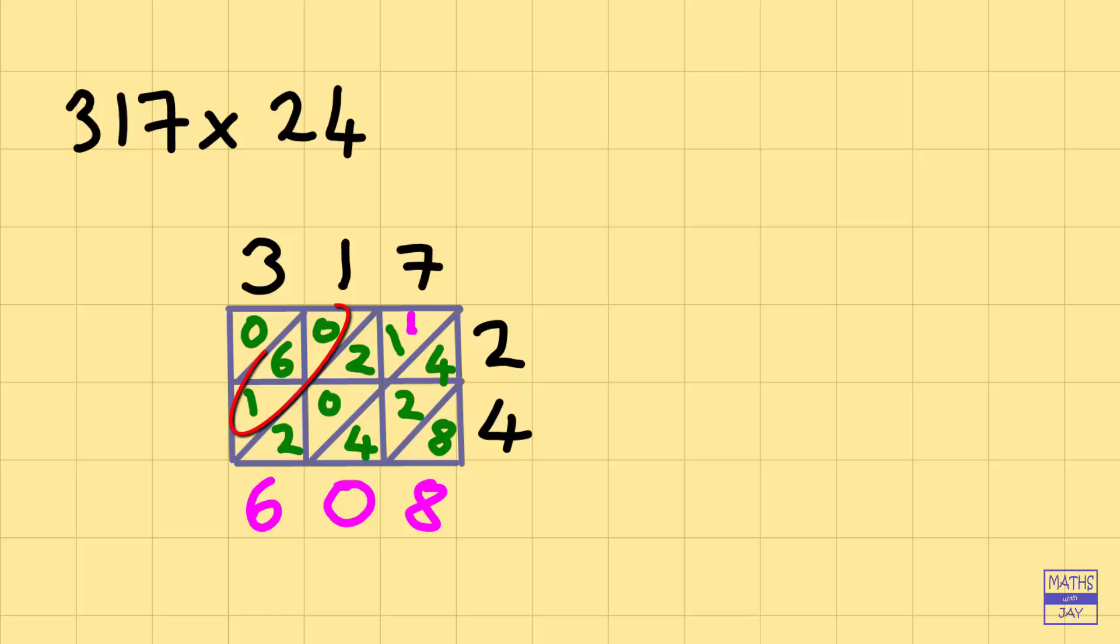The next diagonal adds up to 0 and 6 plus 1 will be 7. And the last diagonal is just 0. So we've got an answer of 7,608.